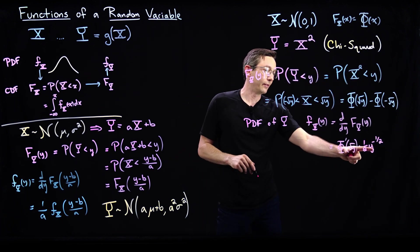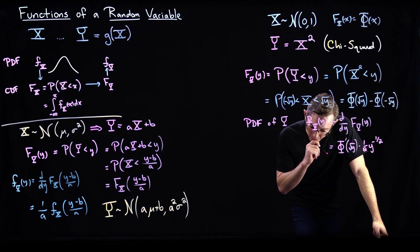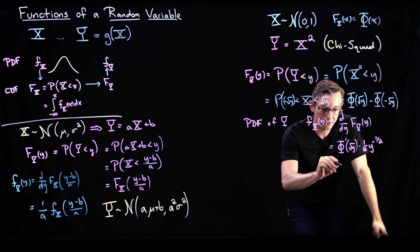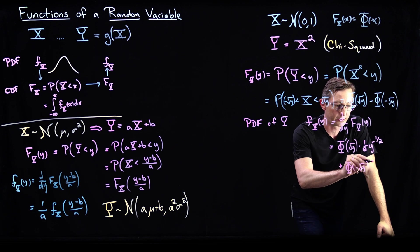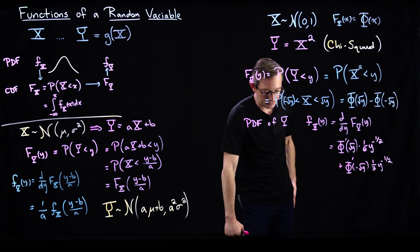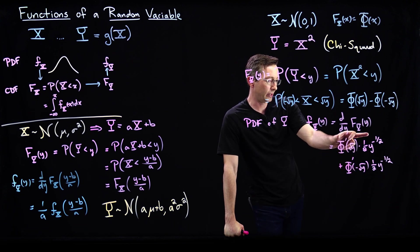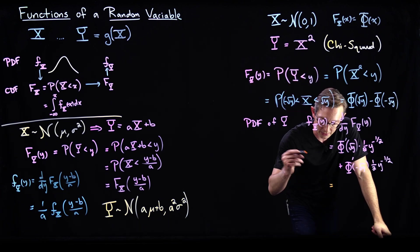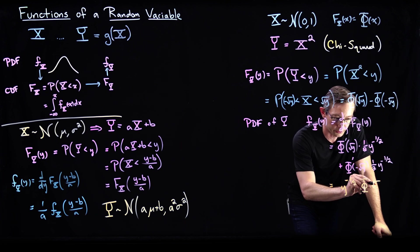I have two copies of this term. And then minus the same thing — phi prime of minus root y times one-half y to the minus one-half. There is some symmetry trick happening here, because in my notes these two terms combine to equal y to the minus one-half times phi prime of root y. So I need to figure out why I can combine these two quantities, since one has minus root y and the other has plus root y.